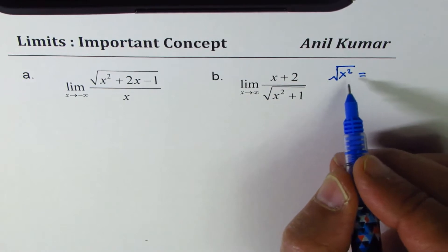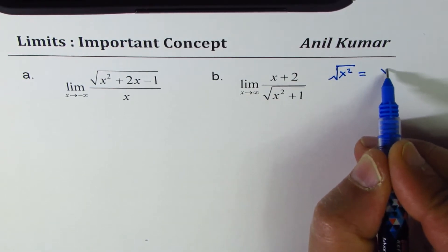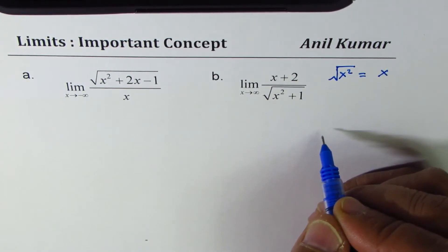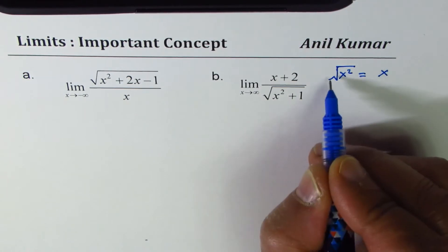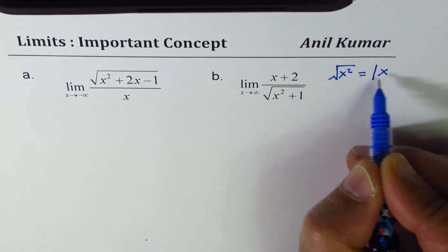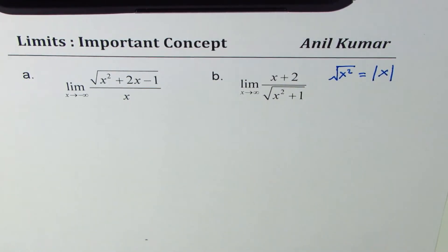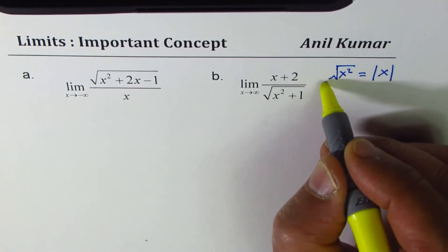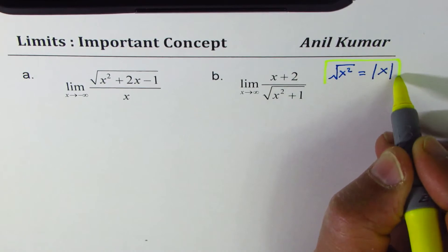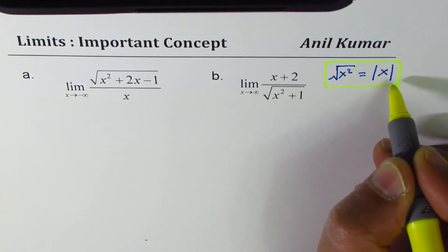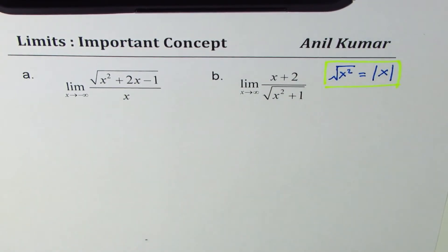Most of the students write this as x. It is not actually x. It is always a positive value and therefore it is absolute value of x. Now that is key to answer this question. You can look into my videos on square root of x square and understand it better. Square root of x square is absolute value of x.